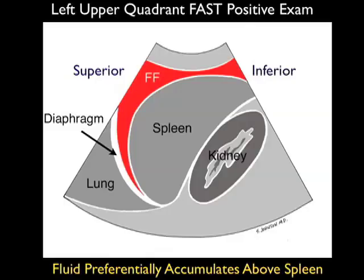We see the area of fresh fluid as demarcated by the orange color, and notice that it layers out predominantly below the diaphragm and above the spleen — this is the area where fluid will preferentially deposit in the left upper quadrant. There are ligaments that sling from the diaphragm all the way to the colon that prevent the flow of fluid into the area between the spleen and the kidney until the fluid collection is relatively large.